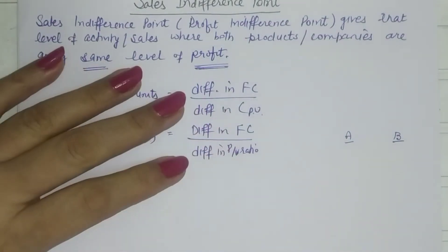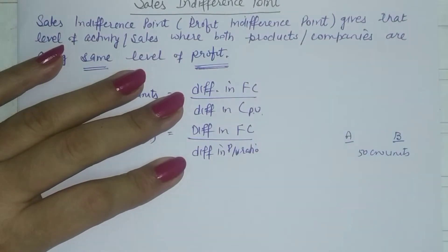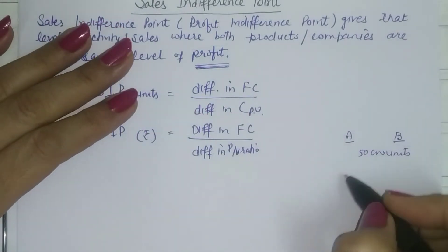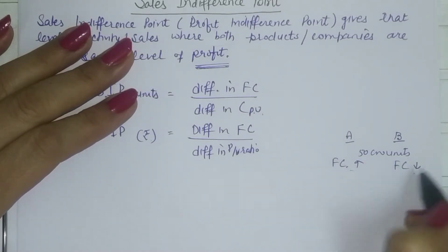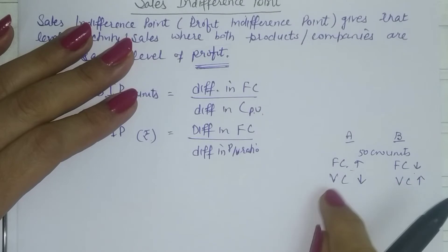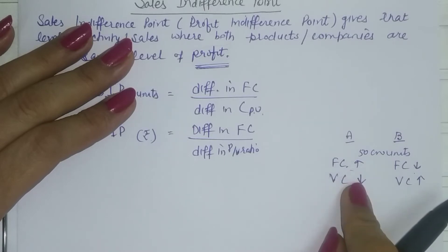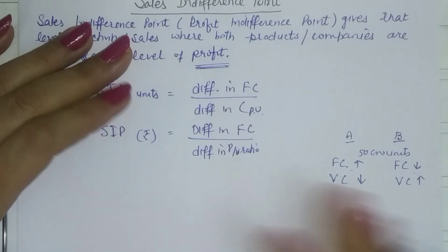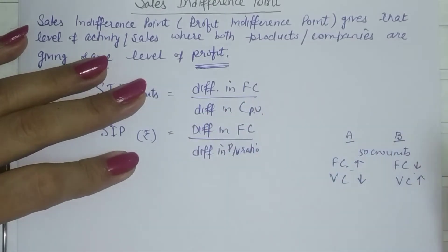At a given level of activity, say 50,000 units, both options give you the same profit. The decision is difficult because the underlying assumption is that one method has higher fixed cost but lower variable cost compared to the other. The benefit of lower variable cost is cancelled out by the higher fixed cost, so we must make the decision very judiciously by calculating SIP and comparing it with the actual level of activity.